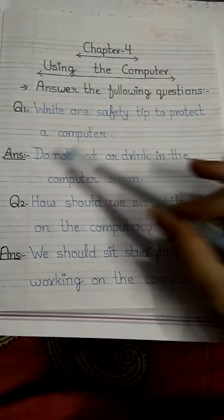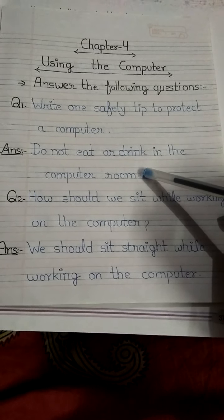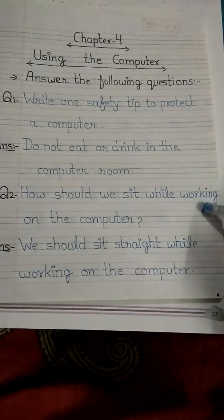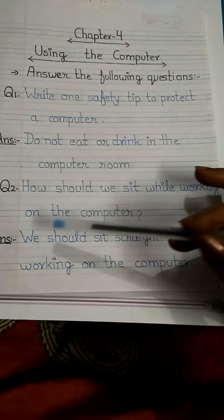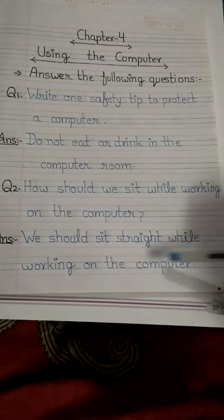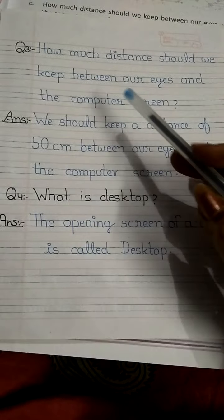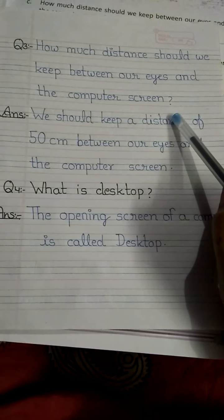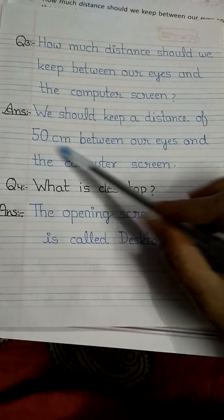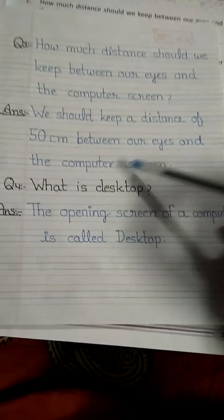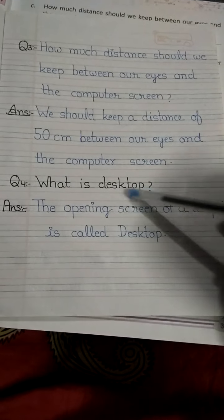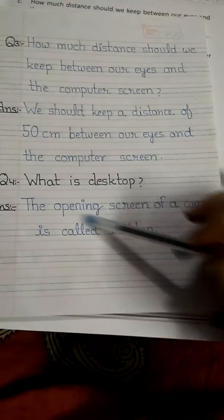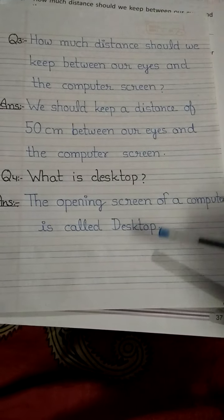To recap: Write one safety tip to protect the computer — do not eat or drink in the computer room. How should we sit while working on the computer? We should sit straight. How much distance should be kept between our eyes and the computer screen? We should keep a distance of 50 cm. What is the desktop? The desktop is the opening screen of the computer.